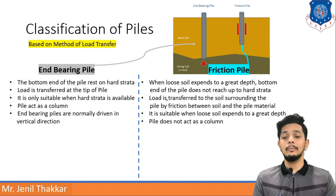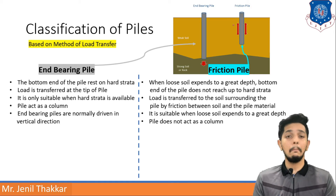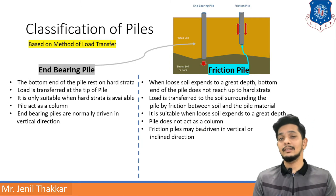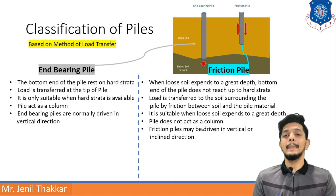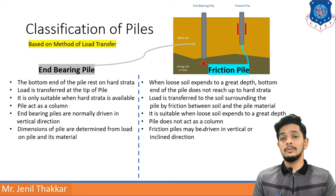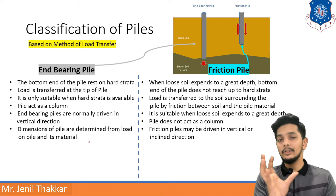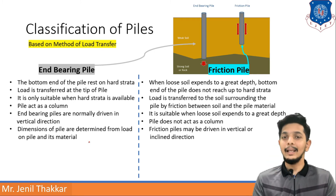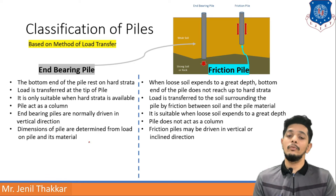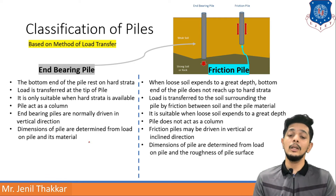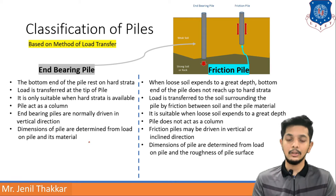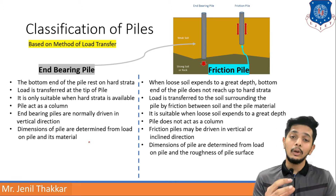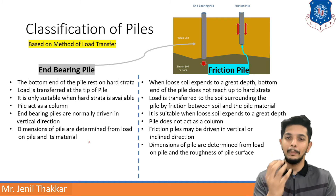End bearing piles are normally driven in a vertical direction, as you can see in the image. For friction piles, a vertical direction is not necessary. The dimensions of end bearing piles — diameter and length — are determined from the total load and the pile material, whereas for friction piles dimensions are determined from the load as well as the roughness of the pile surface, since friction plays a big role.